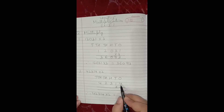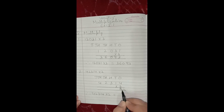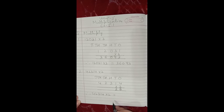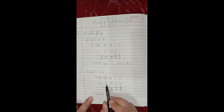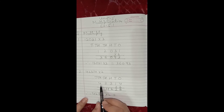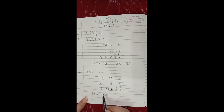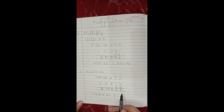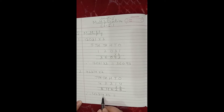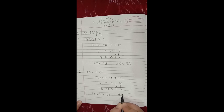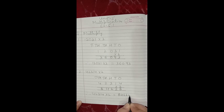So let us first of all multiply the ones. 2 4's are 8. Then tens: 2 1's are 2. Let us move on to hundreds: 2 3's are 6. Now thousands: 2 2's are 4. And lastly 10,000: 2 4's are 8. So our answer is 84,628. This is our product, because the answer which we get after multiplication is known as the product. Therefore 42,314 multiply by 2 is equals to 84,628.